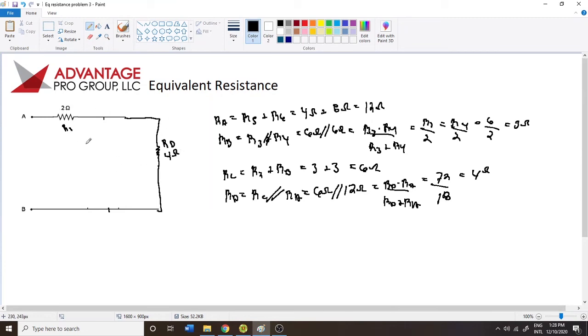Okay, and then now the remaining Req or RE, whichever. 2 ohms plus 4 ohms. R1 plus RD, which is equal to 2 plus 4, which equals 6 ohms. And that's the result.